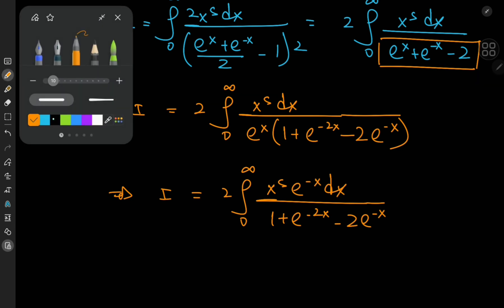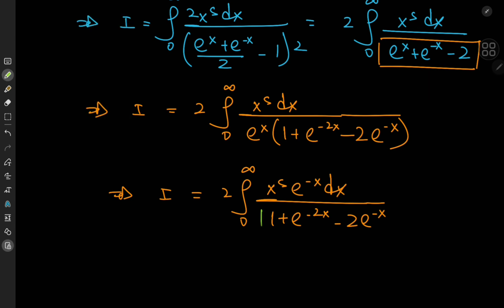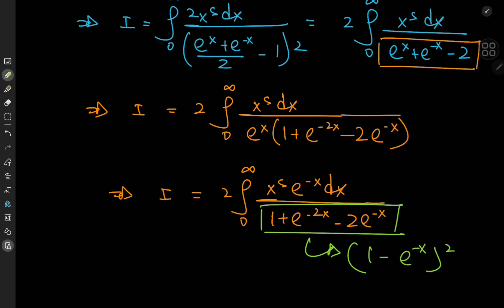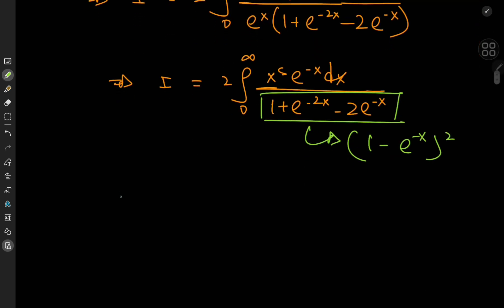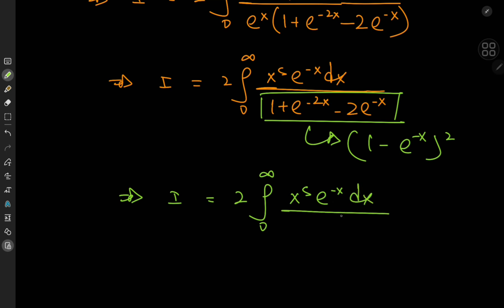The denominator is the square of (1 minus e^(-x)), so this means that I is twice the integral from 0 to infinity of x^s · e^(-x) dx divided by (1 minus e^(-x)) squared.